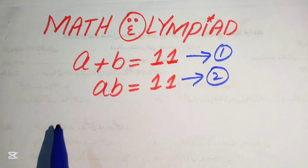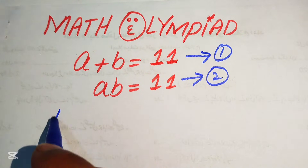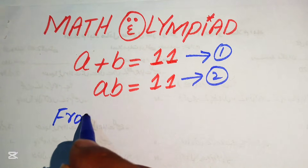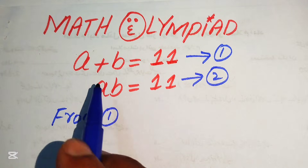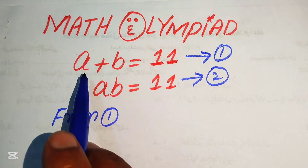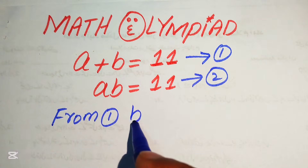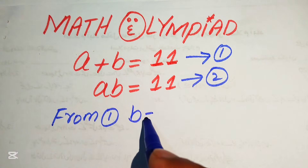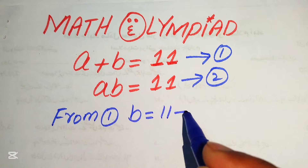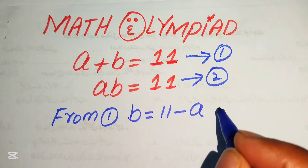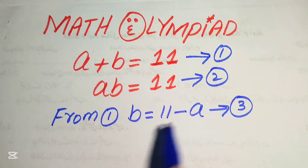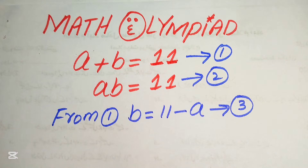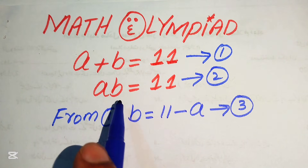So here first we need to focus on equation number 1, so that from equation number 1 we move this a to the right hand side and we get b equals to 11 minus a, and we call this our equation number 3.